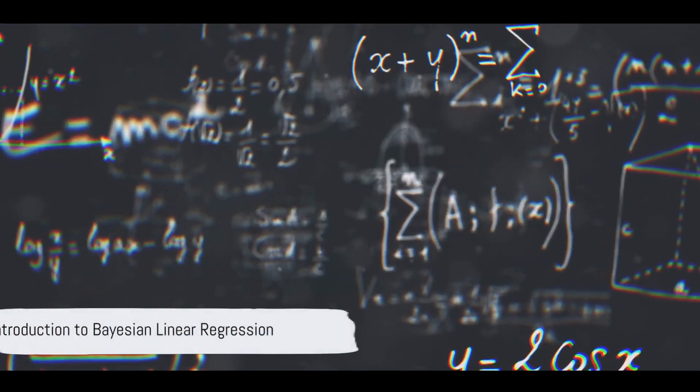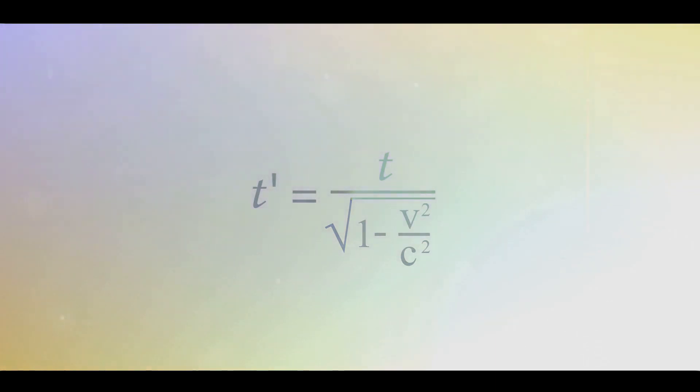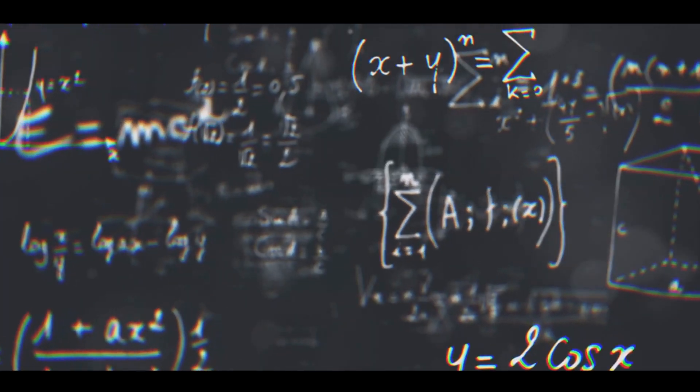Enter Bayesian linear regression. It takes the concept of linear regression and adds a twist. Instead of assuming that all predictions are equally likely, Bayesian linear regression incorporates prior knowledge or belief about the parameters. This prior knowledge is represented as a probability distribution.